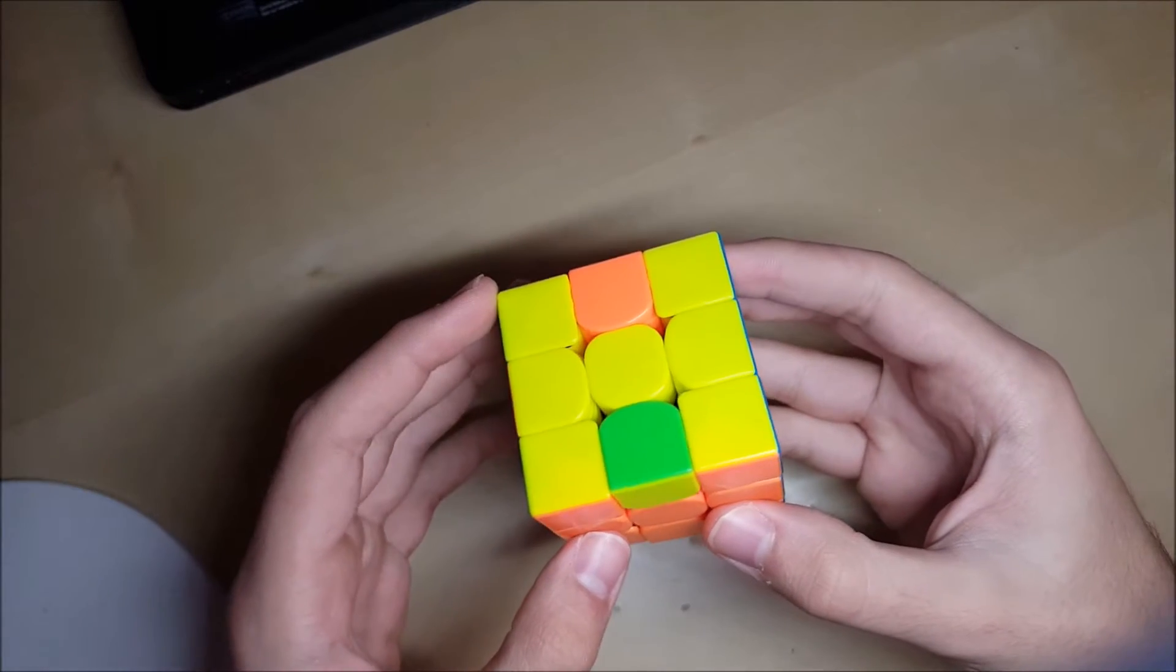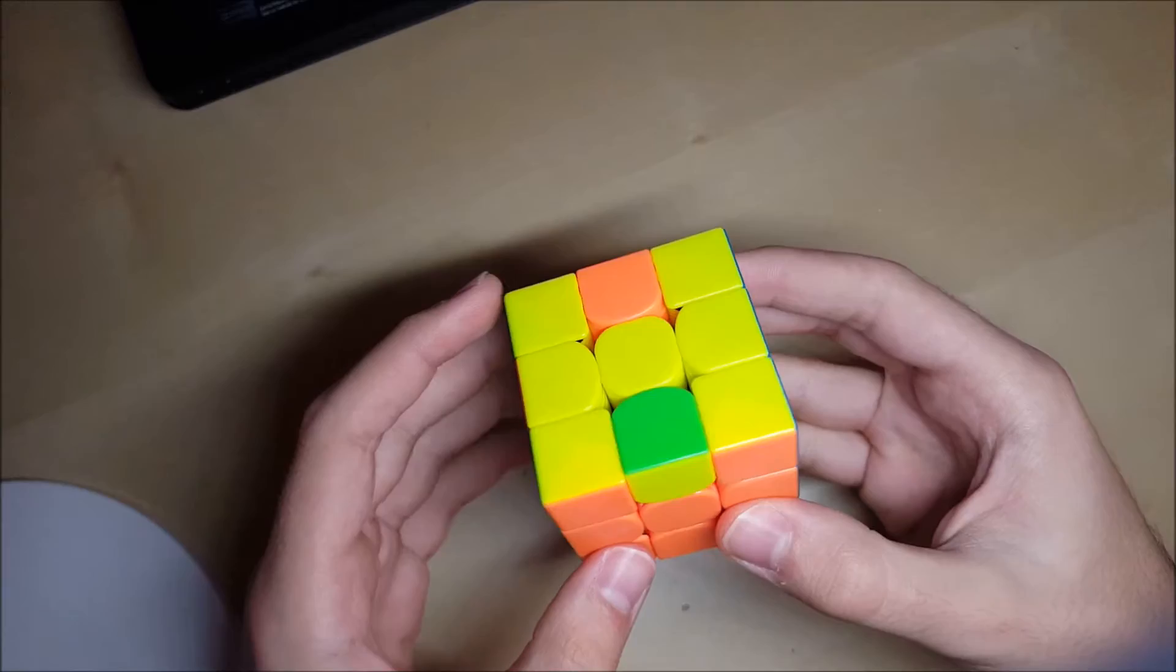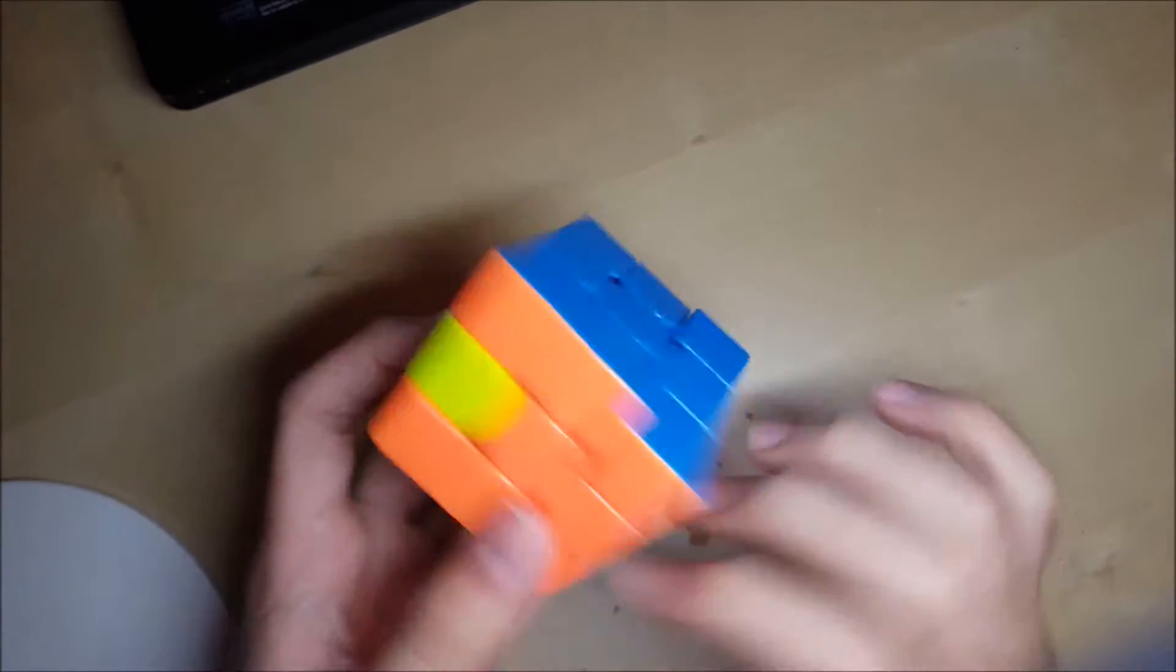In this video in the EOLR series, we'll be looking at the 2-0-0 case, so 2 on top opposite, 0 on bottom.